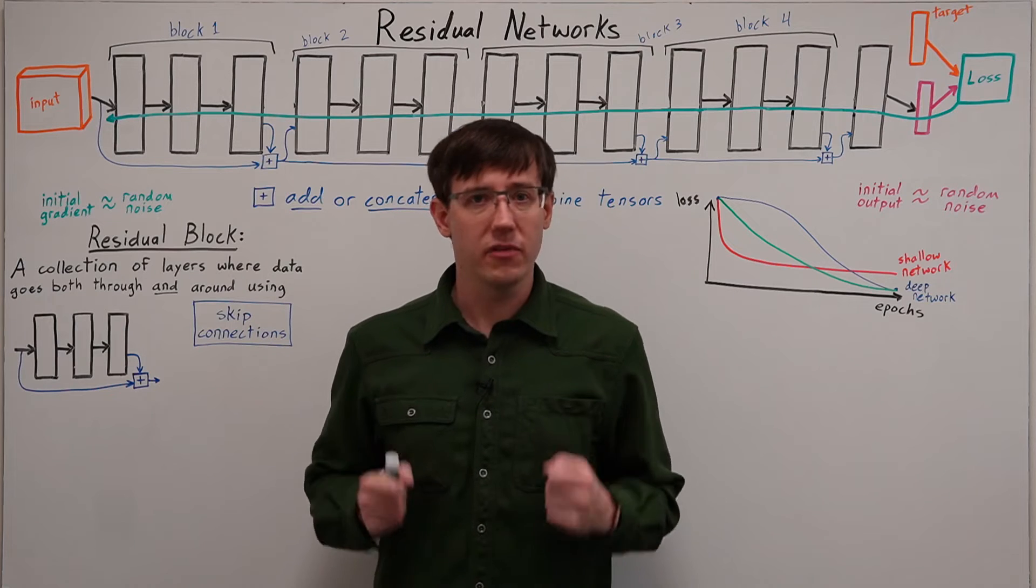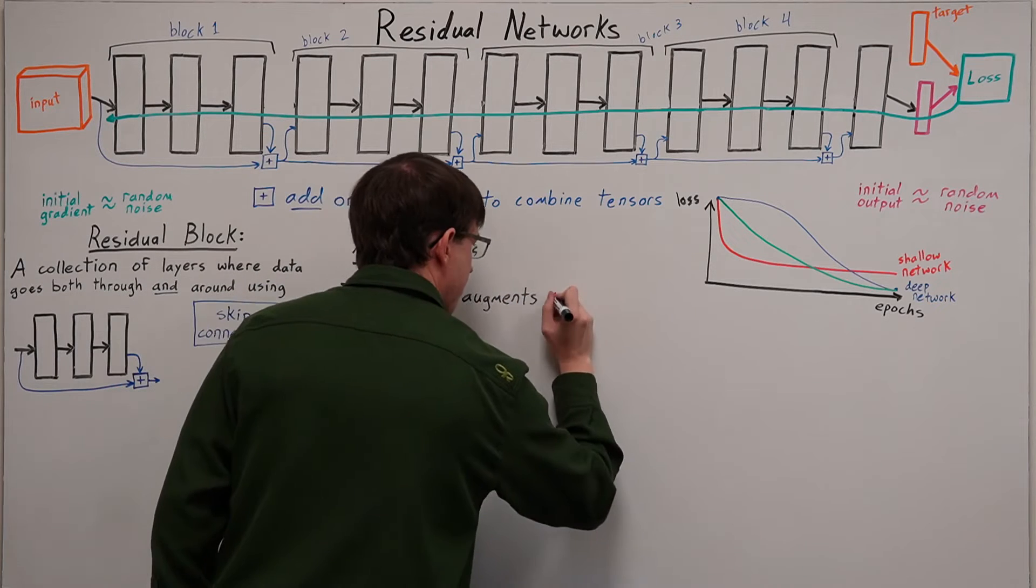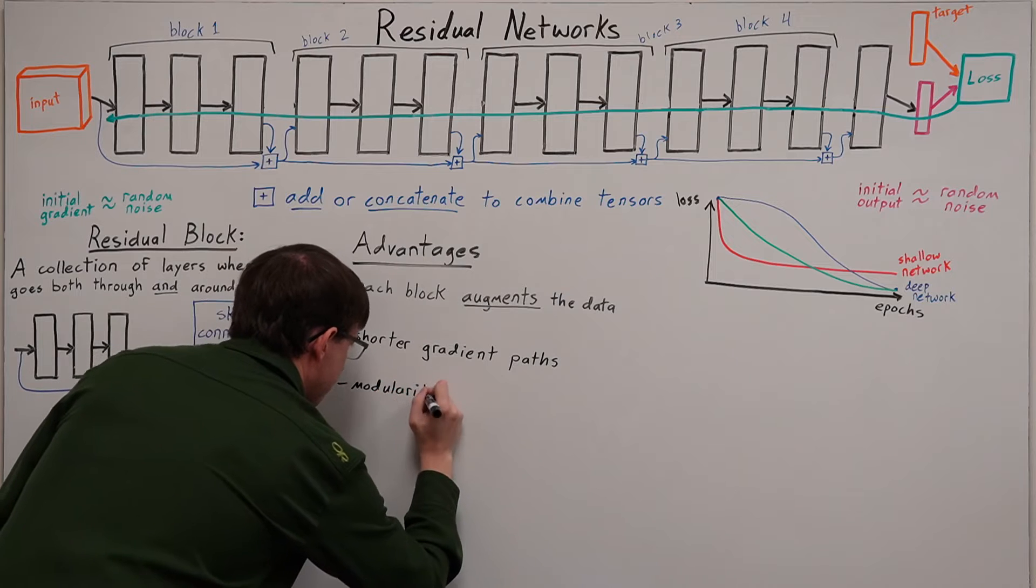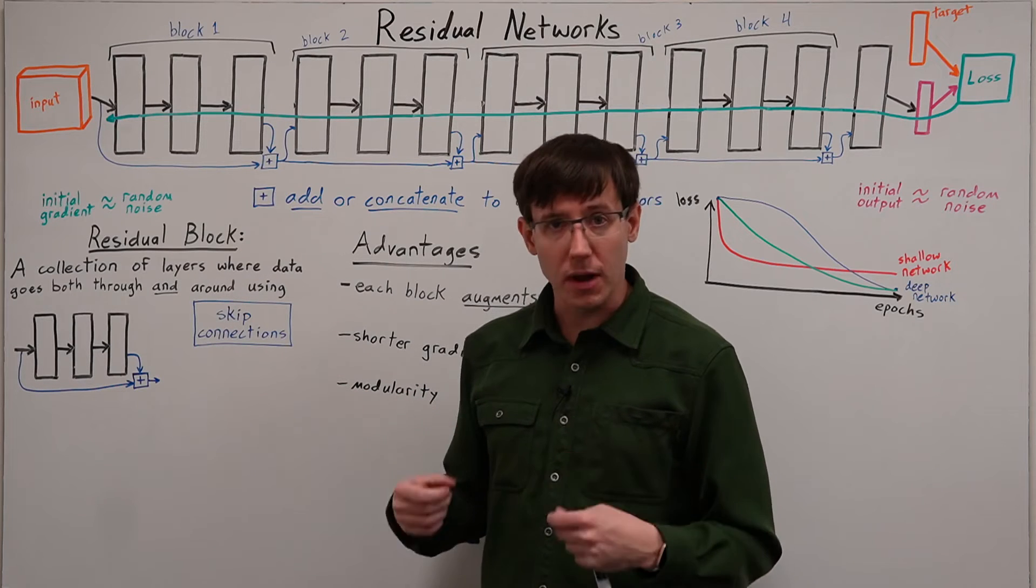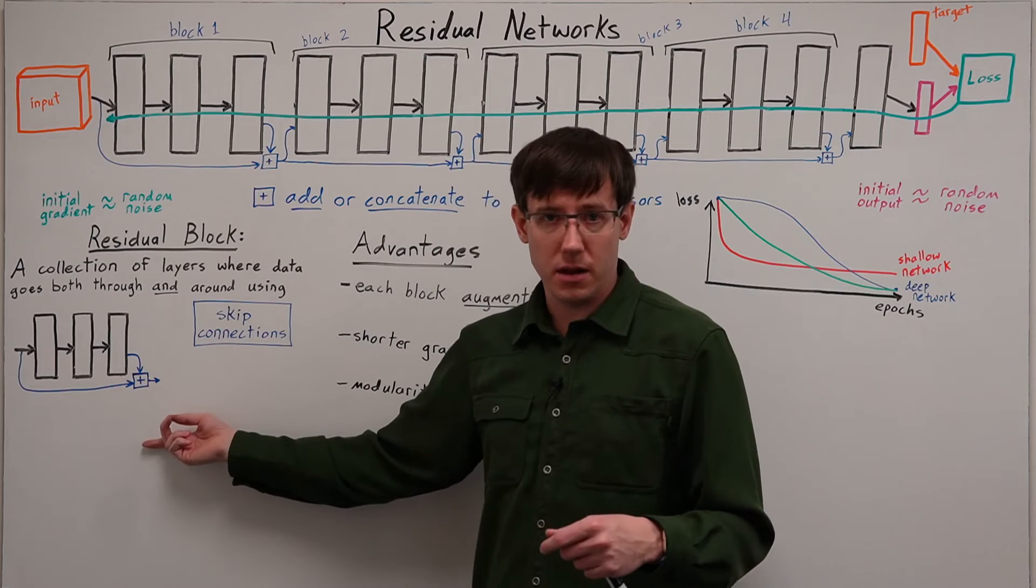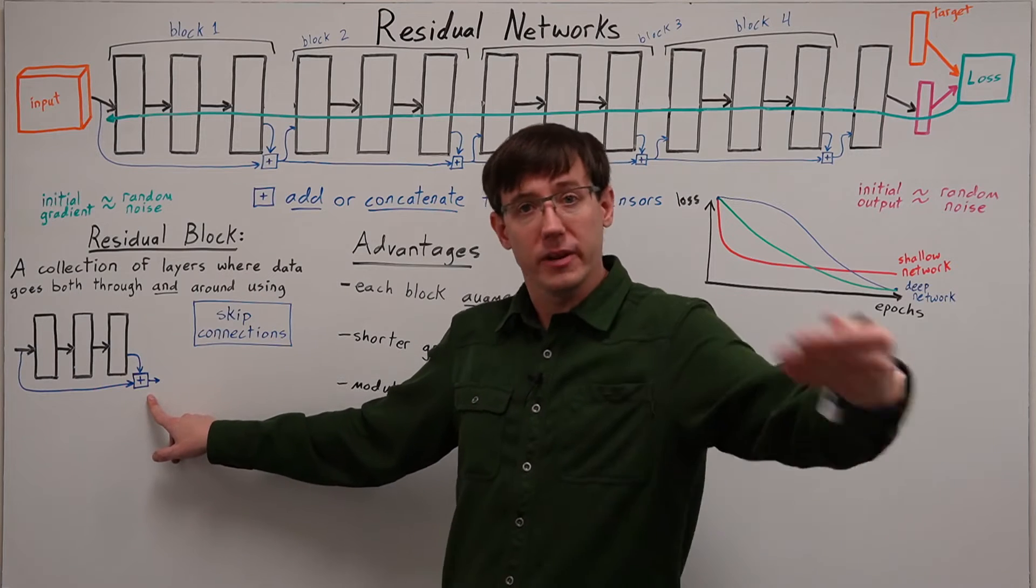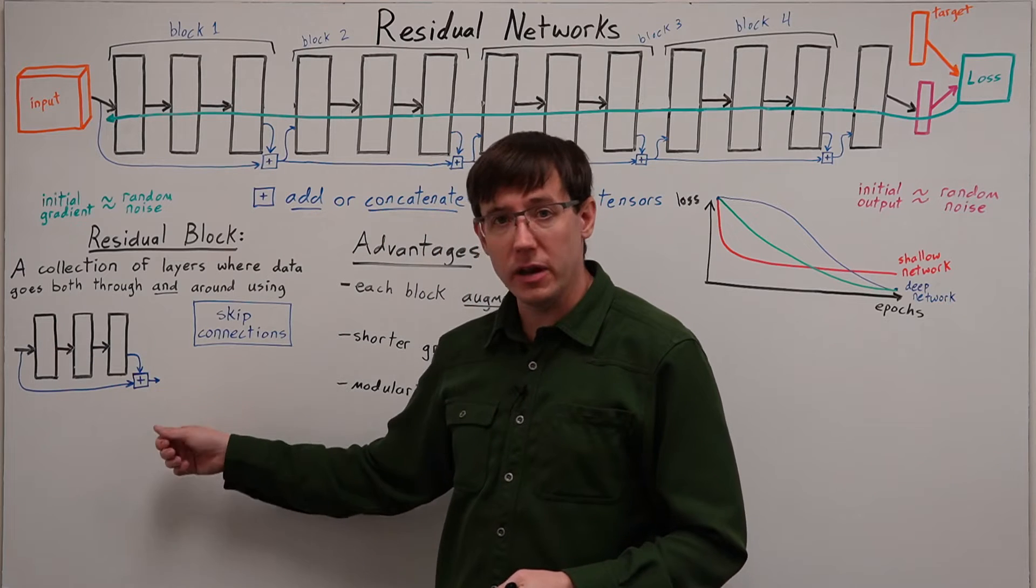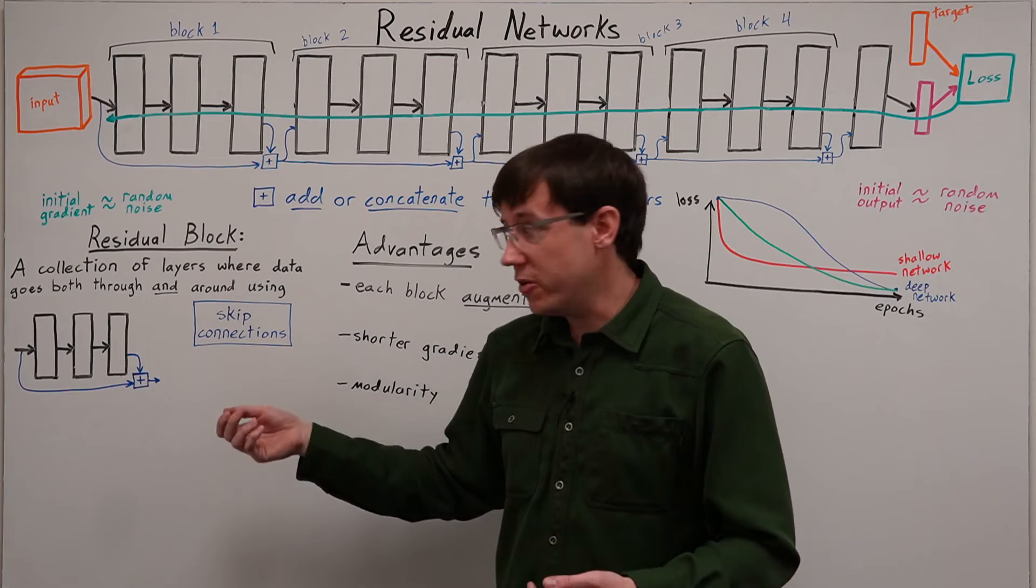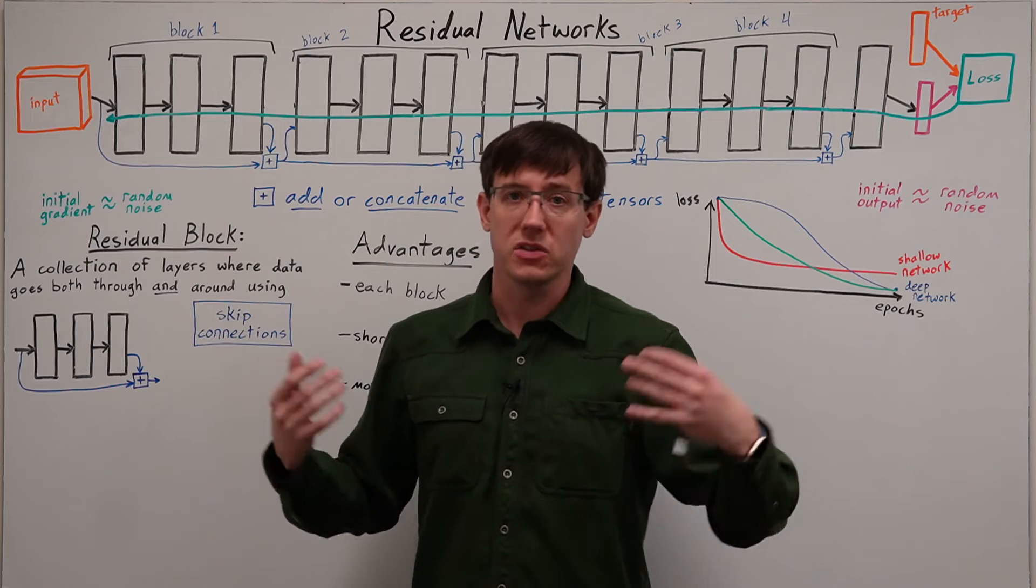Well, they have a couple of big advantages. The first big advantage of a residual block is that the function it is computing is augmenting the existing data. Since the input is being passed along and will still be available to later layers in the network, the job of this layer is no longer to figure out everything important about the input that needs to be passed along, but rather to figure out what information it can add on top of the input to make subsequent processing easier.